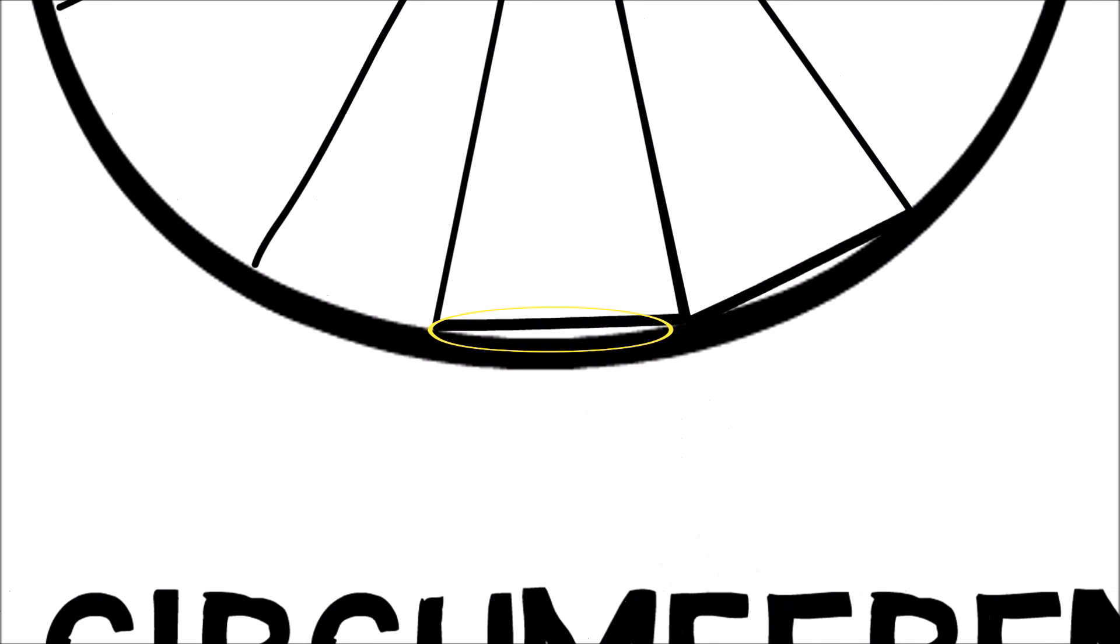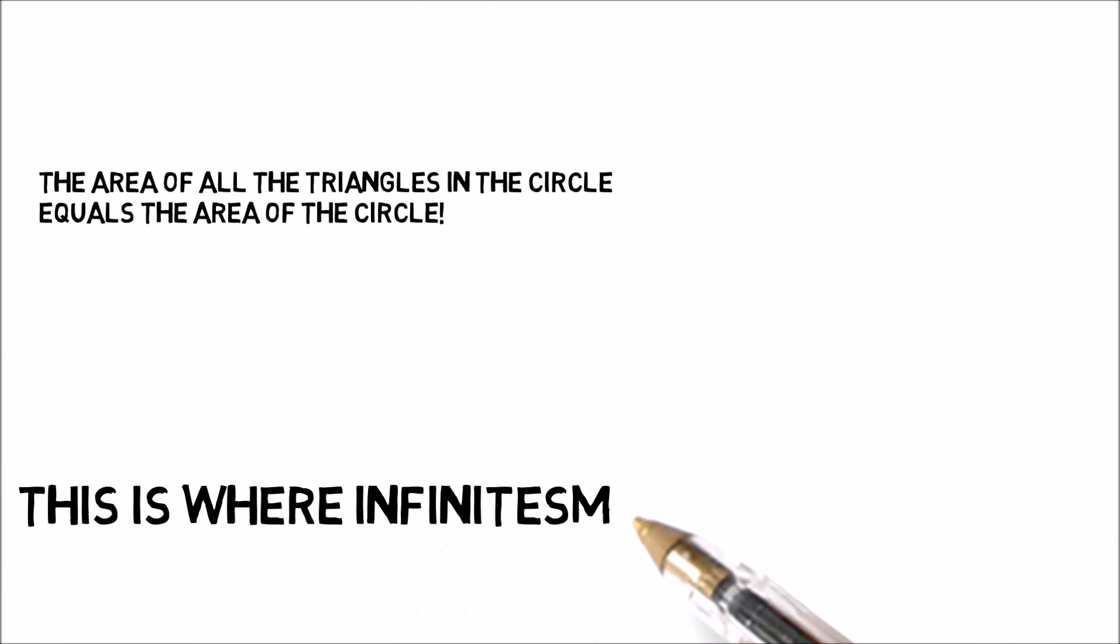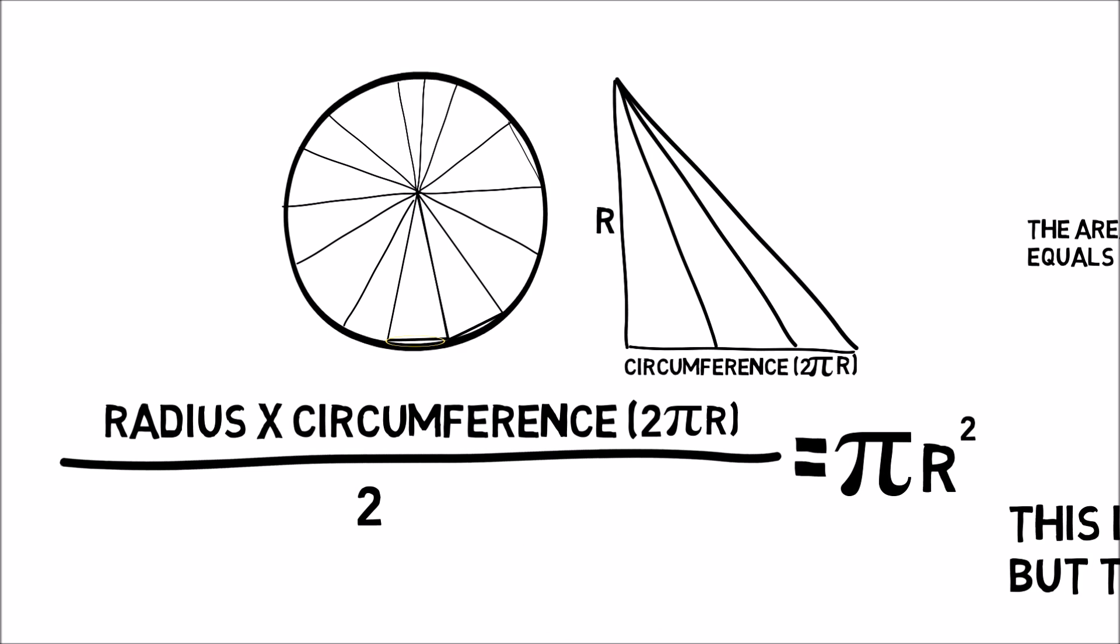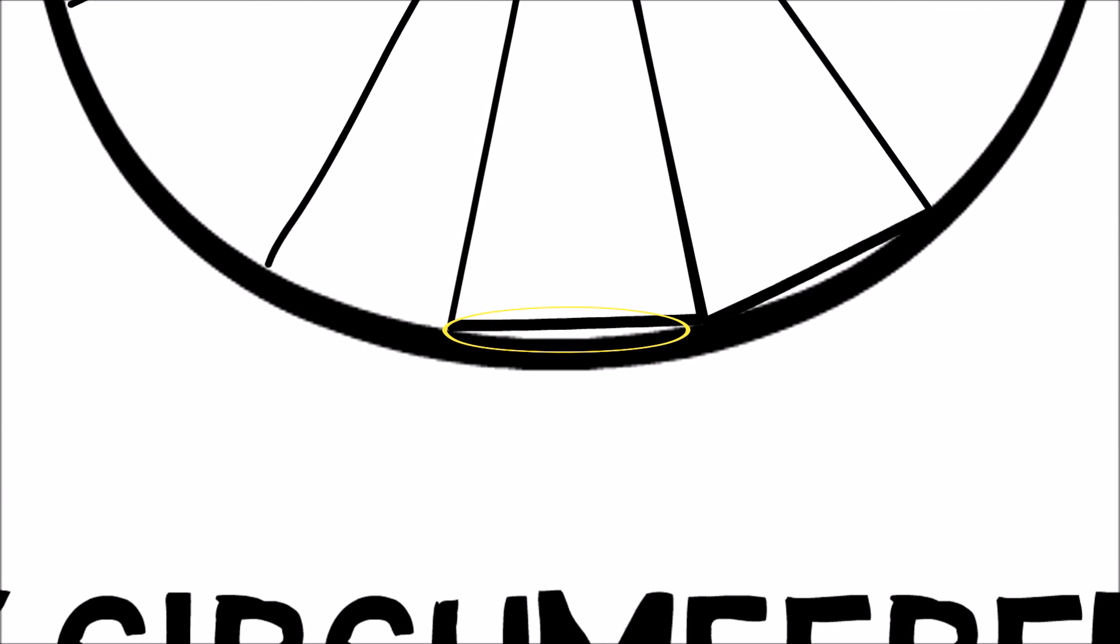Remember the blank spaces under the triangle? What happened to those? This is where infinitesimals get weird, but they also work. Despite there being extra space in the circle, the areas of the triangle within still equal the area of the whole circle, including the space below the triangles that was not in the triangles.